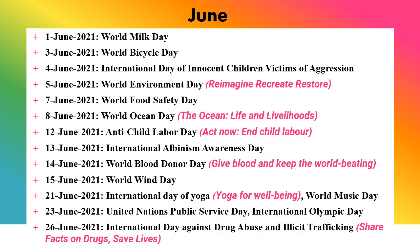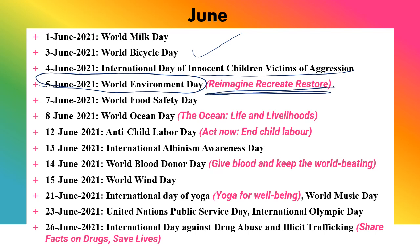Now June: 1st June is World Milk Day. 3rd June is World Bicycle Day. 4th June is International Day of Innocent Child Victims of Aggression. 5th June is World Environment Day — very important — and you must prepare its theme 100%: 'Re-Imagine, Re-Create, Restore.' 7th June is World Food Safety Day.